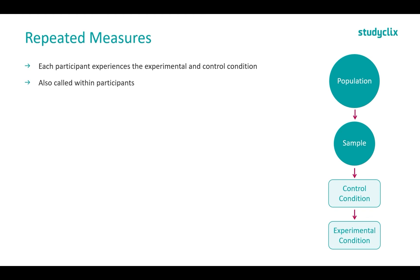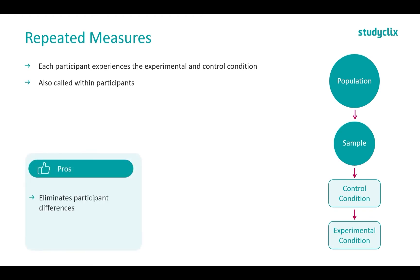You don't have to have them in the order I presented — you can do the experimental before the control condition. It just matters that everyone in the sample experiences all conditions. A good thing about this design is that it eliminates participant differences, since every participant experiences every condition. We can also work with a smaller number of participants compared to independent measures, since we're not splitting them off into two conditions.